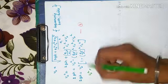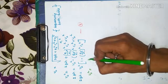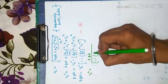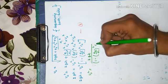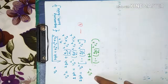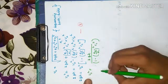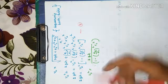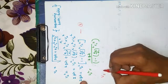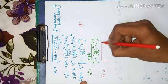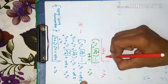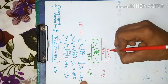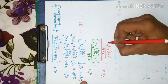Solving for V2: V2² = 2gh / [1 minus (A0/A1)²·Cc²]. Taking the square root on the right-hand side, V2 = √(2gh / [1 minus (A0/A1)²·Cc²]).